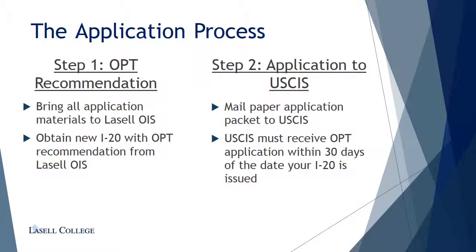As mentioned in the OPT Basics tutorial, the OPT application process is a two-step process. First, F-1 students who are eligible to apply for pre-completion or post-completion OPT must obtain a new I-20 with OPT recommendation. In order to receive this I-20, you must collect all application materials listed on the OPT checklist and make an appointment with an advisor at the OIS. After you receive your OPT I-20, the second step is to mail all OPT application materials to USCIS. It is important that they receive the OPT application within 30 days of the issue date on the I-20.